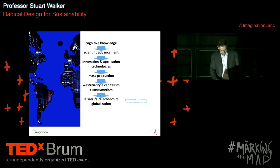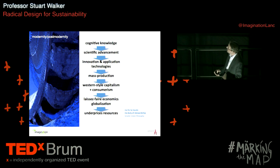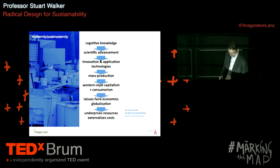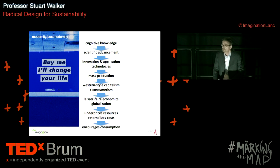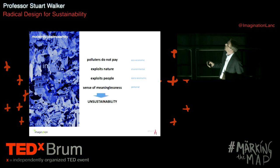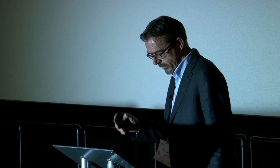The problem with that system is that it underprices resources. There's no tight locale, and there's no sense of stewardship. It externalizes all the costs and constantly encourages consumption. The polluters don't pay. It exploits nature like no other civilization in the history of the world. It exploits people — treats people as units of production. And always accompanying this period of modernity has been a sense of meaninglessness. And most of all, of course, it's an inherently unsustainable system because we live on a finite planet, and that's a continual growth model.